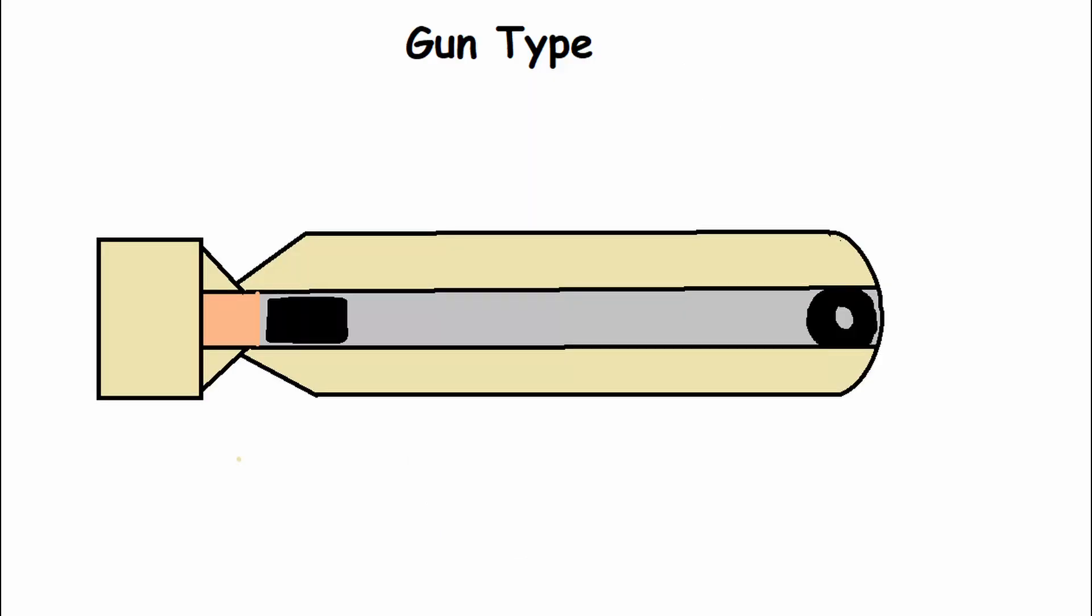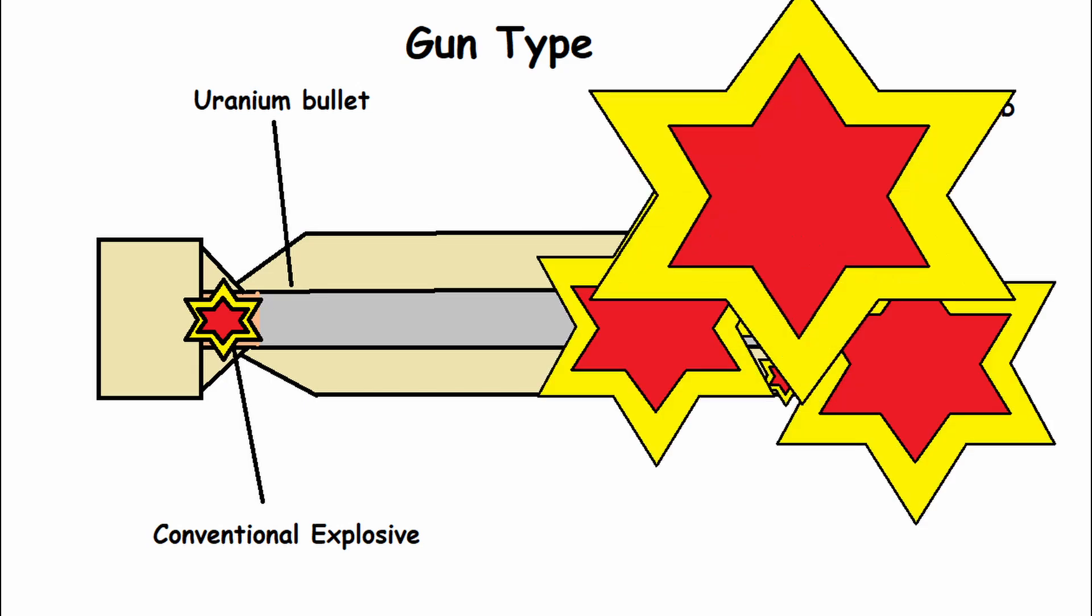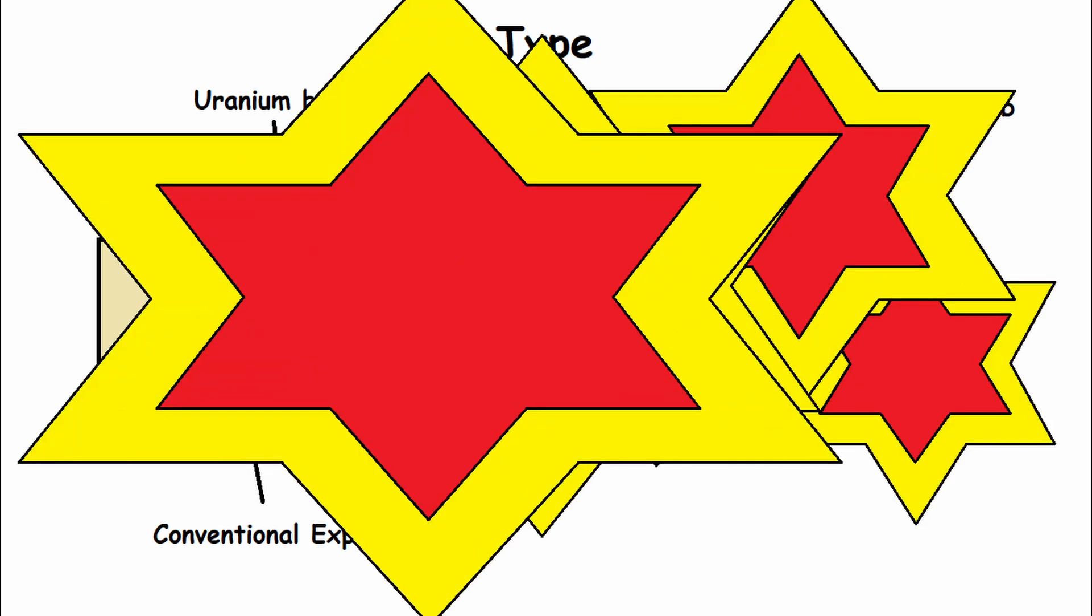One type of nuclear bomb is called the gun type. This uses two slabs of uranium, both of which are below the critical mass, positioned at opposite ends of a cylindrical tube. Then, using a conventional explosive, one of the slabs, called the bullet, is rapidly launched towards the other slab. Once it gets to about 25 centimeters away from the other slab, their combined mass exceeds the critical mass, initiating the chain reaction that results in an atomic explosion.